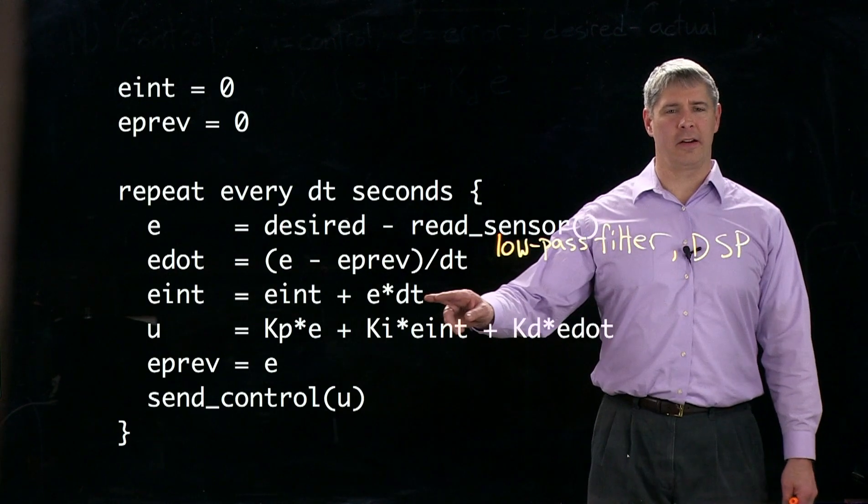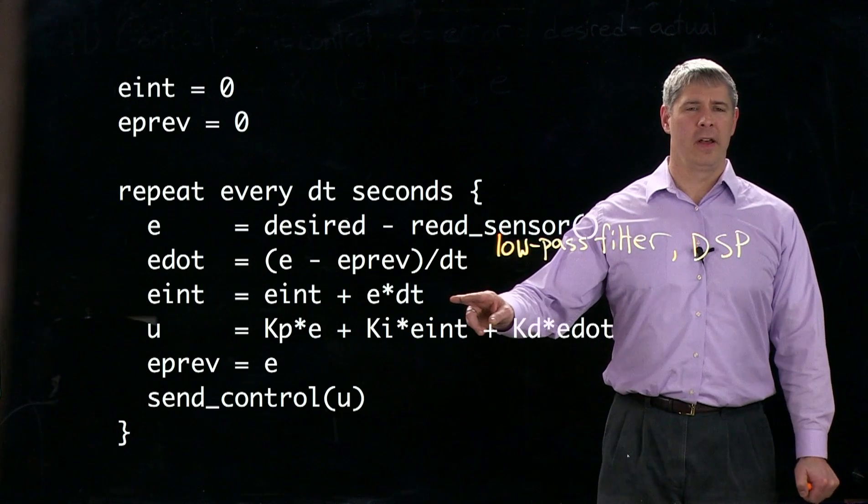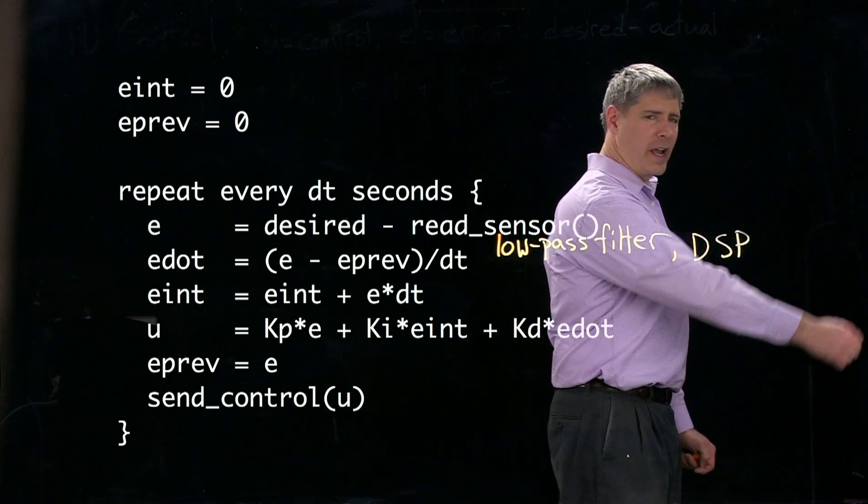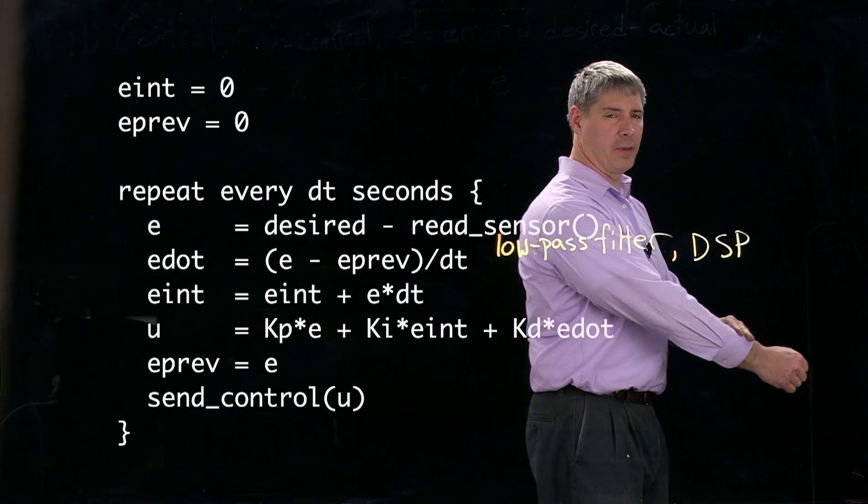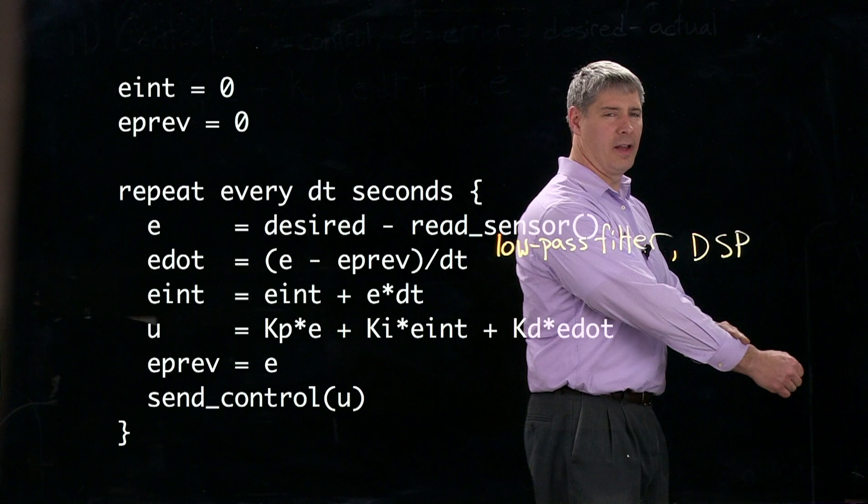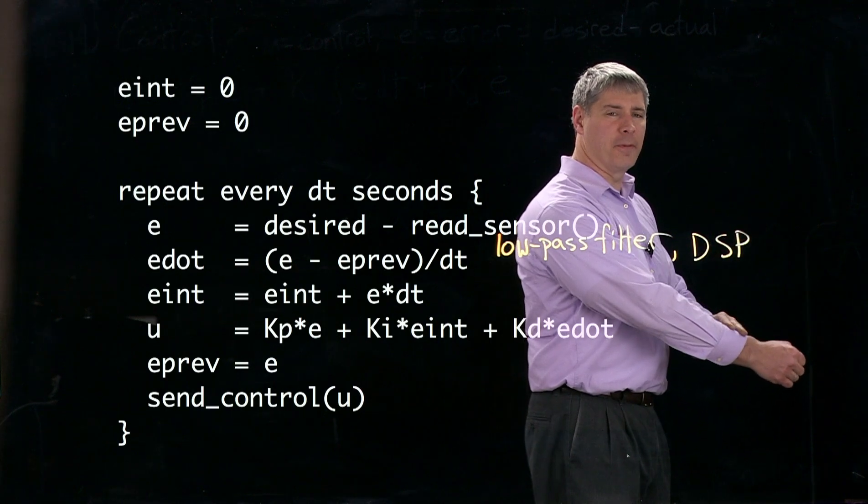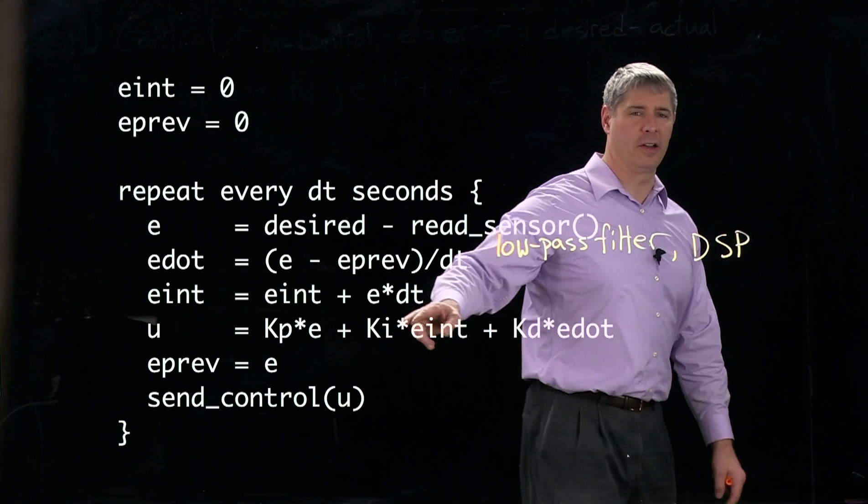Another thing you can do is here in the integral term, imagine that the arm is trying to control up to 90 degrees, but you've blocked it and prevented it from moving for a long period of time. Then that error is going to integrate up for a long period of time and give you a very large signal here,